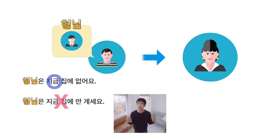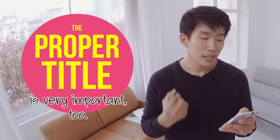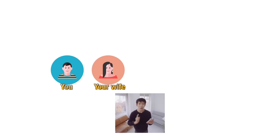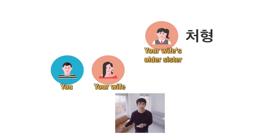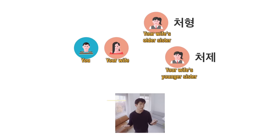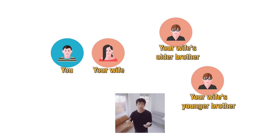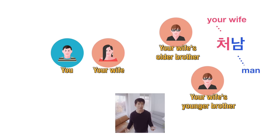Apart from politeness level rules, it all comes down to knowing the proper titles. Here are some titles I've written down for you. For guys: your wife's older sister is 처형 — 처 meaning 'wife,' 형 meaning 'older.' Her younger sister is 처제. For example, my wife has two younger sisters, so I have two 처제's. And your wife's older or younger brother is called 처남 — 처 meaning 'wife,' 남 meaning 'man.'